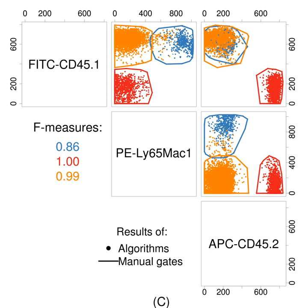Flow cytometry data is in the form of a large matrix of intensities over m wavelengths by n events. Most events will be a particular cell, although some may be doublets — pairs of cells which pass the laser closely together. For each event, the measured fluorescence intensity over a particular wavelength range is recorded, indicating the amount of that fluorophore in the cell. A simplified way of considering flow cytometry data is as a matrix of m measurements of amounts of molecules of interest by n cells.